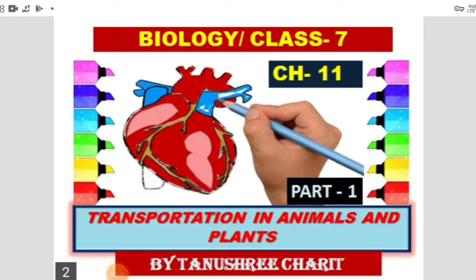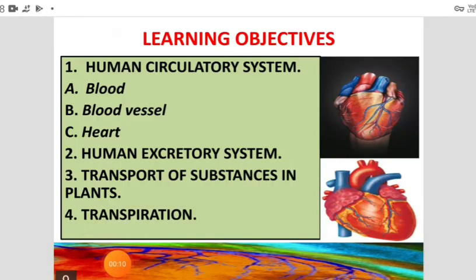Shama Shiva students, today we are going to start another new chapter of biology — that is Chapter 11, Transportation in Animals and Plants. In this chapter we will learn about the human circulatory system that includes blood, blood vessels, and heart. Then we will read about the human excretory system, then transport of substances in plants, and the last topic is the process of transpiration and its importance.